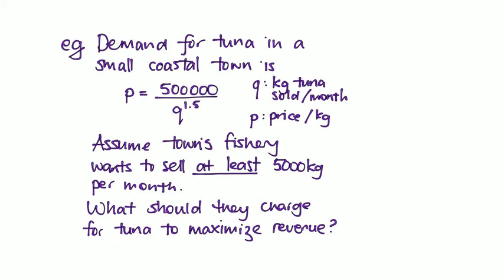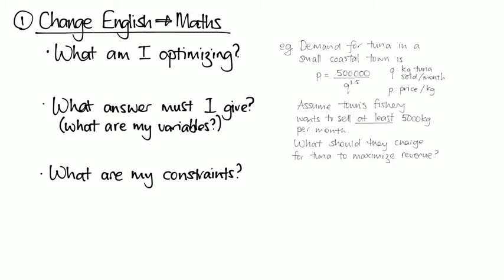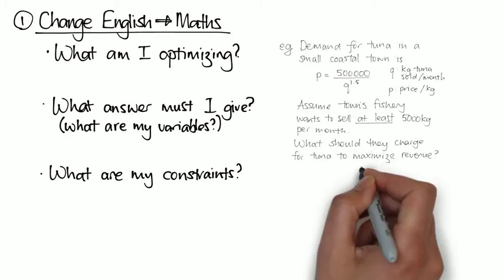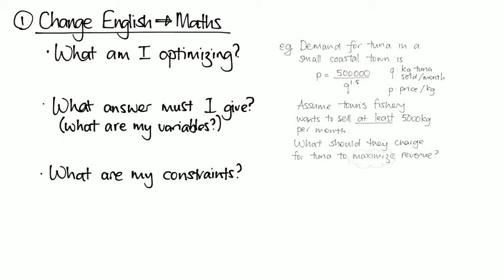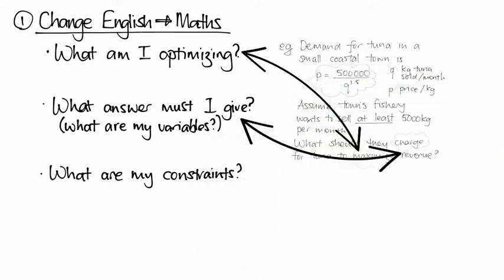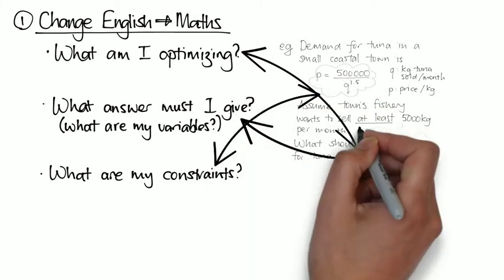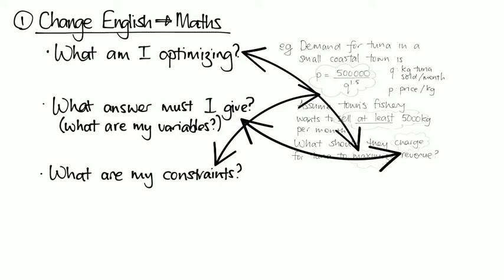We have a fairly common or garden optimisation problem. So the very first thing we need to do is change the English into maths. We look for words like maximise, and that will tell us what we're optimising, and things for what we should charge, for example, which will tell us the variables that we'll be using. Any other equalities or inequalities that we have are going to be constraints, and have a quick check for any other numbers that come up, probably also going to be a constraint.